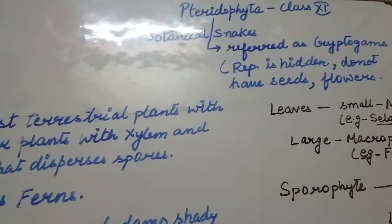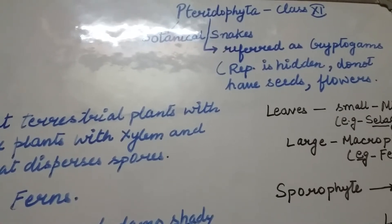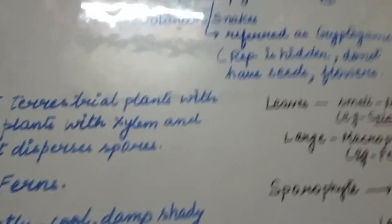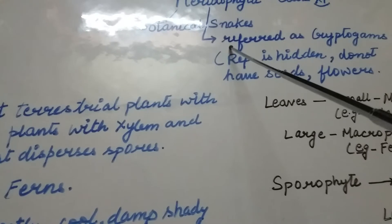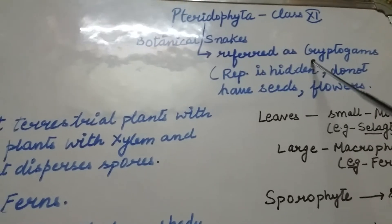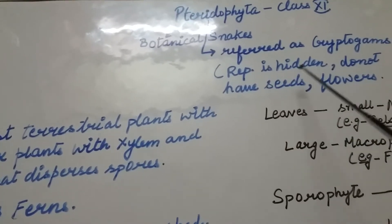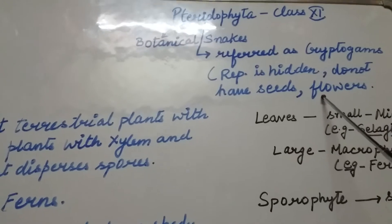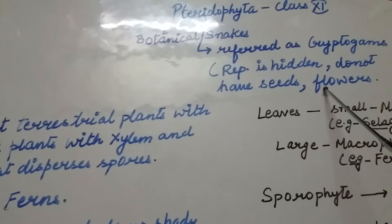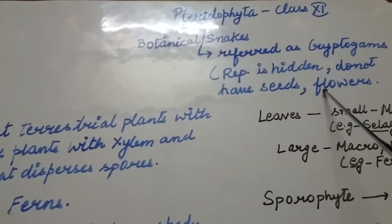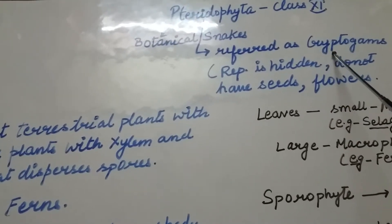In this video we are going to study about another member of the plant kingdom, that is Pteridophyta. Pteridophyta are also called botanical snakes and they are referred to as cryptogames because in Pteridophyta the reproduction is hidden and they do not bear seeds and flowers. Pteridophyta, Bryophyta, and Thallophyta are all grouped together in cryptogames because they do not bear seeds.